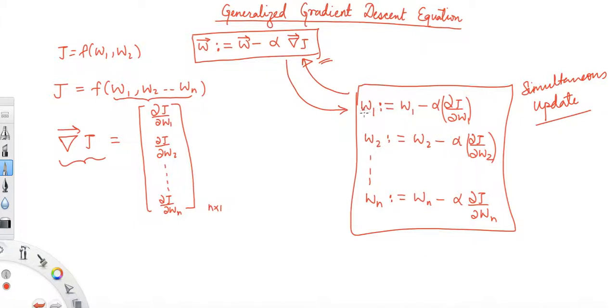It's not like we first update w1, then take the partial derivative of J with respect to w2, then update w2. It's not like that. What we are doing is calculating the partial derivatives of J with respect to w1, w2, ..., wn, and then updating w1, w2, ..., wn.